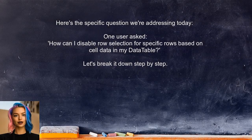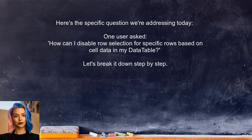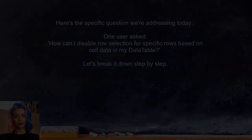Here's the specific question we're addressing today. One user asked: how can I disable row selection for specific rows based on cell data in my data table? This is a common scenario, and we're going to break it down step by step.